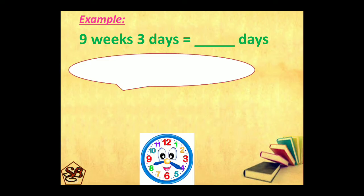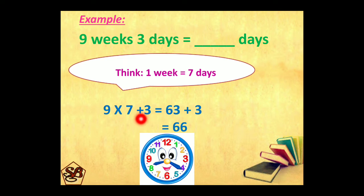Second example: 9 weeks, 3 days into days. 1 week is equal to 7 days. Here, 3 days are already in days, so we will not convert it. We will convert 9 weeks and add 3 to it. Like this: 9 into 7